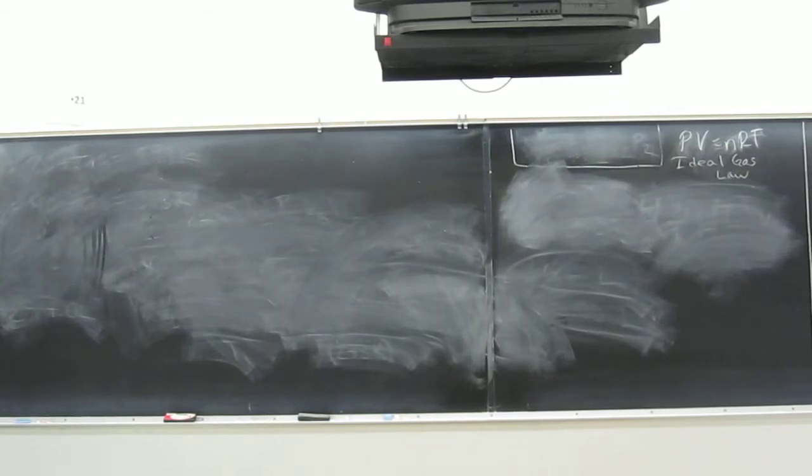Okay, cool. So let's do this problem that's up there on the board. A gas sample has a volume of 2.50 liters when it's at a temperature of 30 degrees Celsius and a pressure of 1.80 atm.